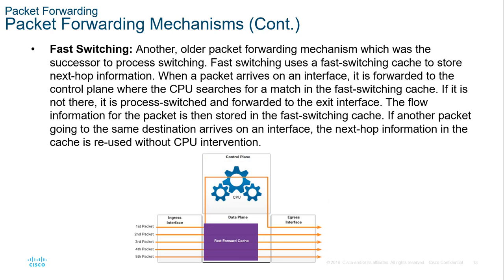Fast switching is also an older forwarding mechanism — a successor to process switching. Fast switching uses a fast-switch cache to store next hop information so it doesn't always have to go to the control plane and processor. If the packet is known and in the fast-forward cache, it doesn't need to go to the control plane. If it's not in the cache, the packet is sent to the control plane, processed, information is stored in the cache, and then it goes out the appropriate egress interface.